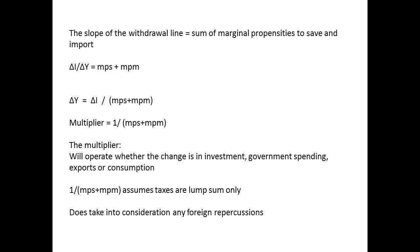The slope of the withdrawal line represents the sum of the marginal propensity to save and the marginal propensity to import. Delta I divided by delta Y equals MPS plus MPM. So delta Y equals delta I divided by MPS plus MPM. The multiplier is determined by 1 divided by MPS plus MPM, assuming taxes are lump sums. The multiplier operates whether the change is through investment, government spending, exports, or consumption. If we import more from country X, then that country may buy more from the UK, increasing our exports — this is what we mean by foreign repercussions.